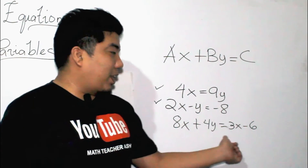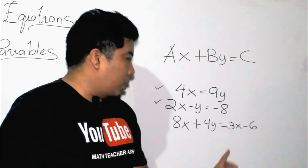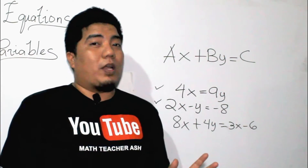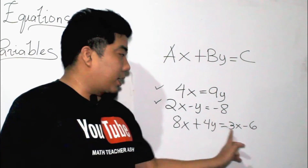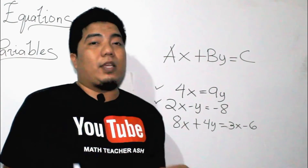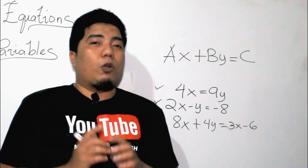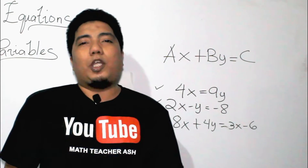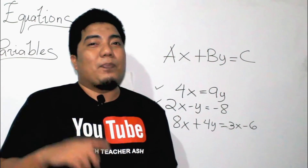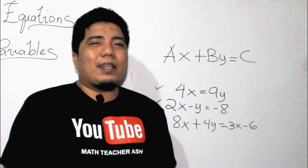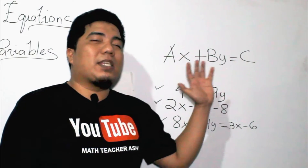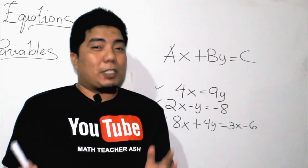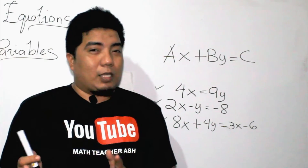We have three x terms — however, two terms have the same variable x, so this can be taken as one variable, x and x, while the second variable is y. Therefore, this also satisfies our linear equation in two variables.